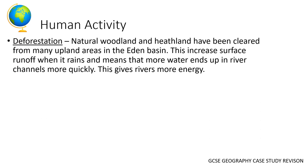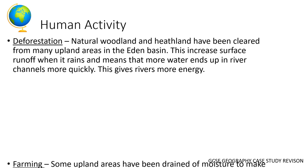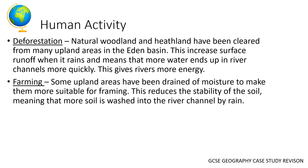What human activity has influenced the River Eden basin? The main one is deforestation — natural woodland and heathland have been cleared from many upland areas, increasing surface runoff so more water reaches river channels more quickly, giving rivers more energy. In farming, some upland areas have been drained of moisture to make them more suitable for agriculture, which reduces soil stability, meaning more soil is washed into the river channel by rain.